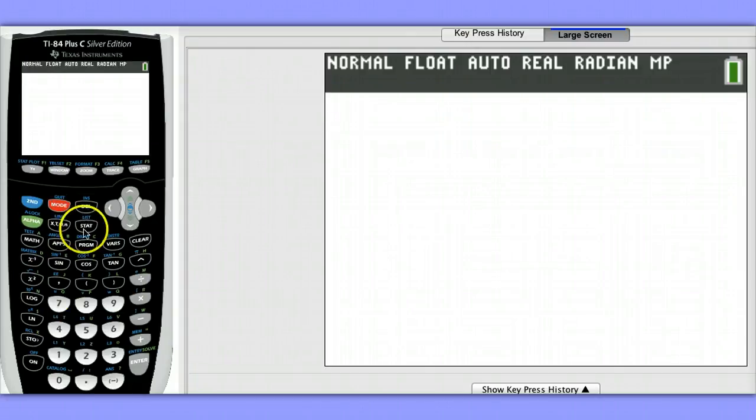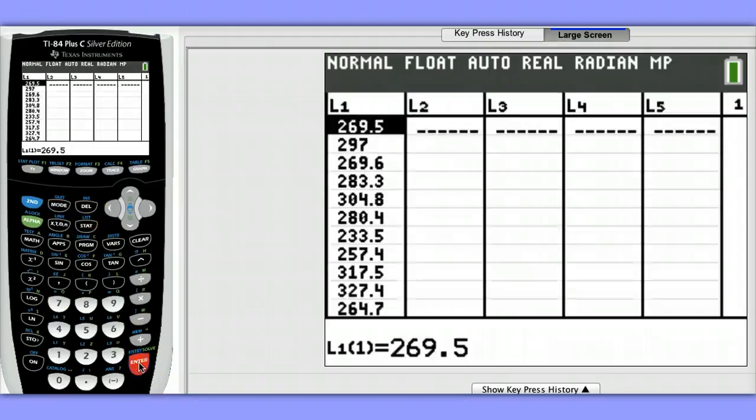Let's start by taking a look at the raw data I have entered in list one. Here I have 20 values for 20 screens from a single day's production. This is the tension on those screens measured in millivolts.